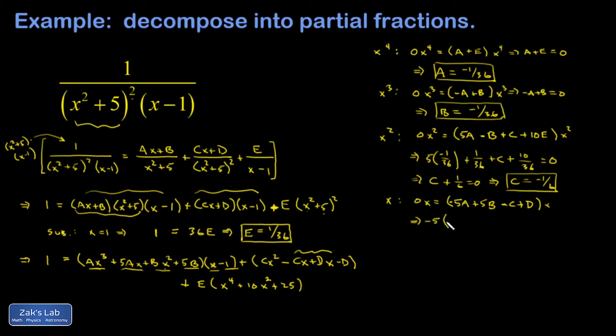Okay, so I have -5a, which is -1/36, plus 5b, b is -1/36, minus c, that's a plus of 1/6, 1/36 plus d has to be 0. And these first two terms cancel each other, they're just opposites, and I end up with d equals -1/6.